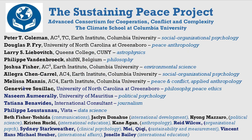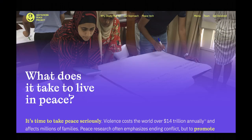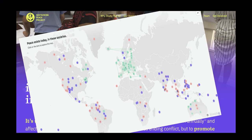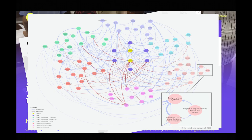So this group has been working for about 10 years to take peaceful societies seriously. If you go to our website, you'll see a world map of many of the peaceful societies that exist today that you may not be aware of, and what we call the peace systems. Our approach is outlined there.